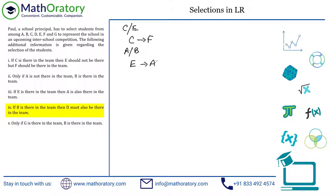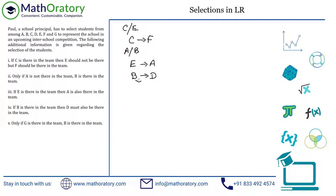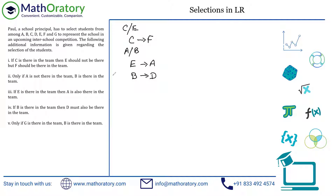The fourth condition says: if B is there, then D must also be there in the team. Again, very similar to the previous one: B implies D. Whenever I'm solving a question and I see B selected, I automatically know D must be selected too. The word 'must' or 'should' here really doesn't make any difference — it's the same meaning.